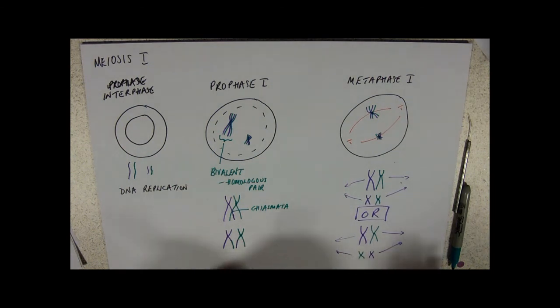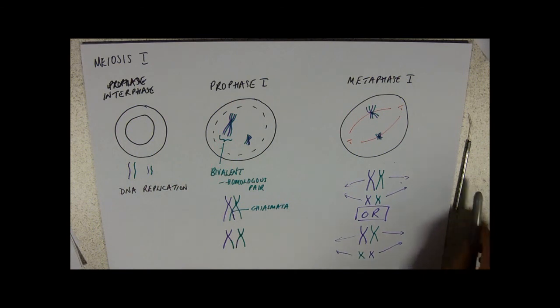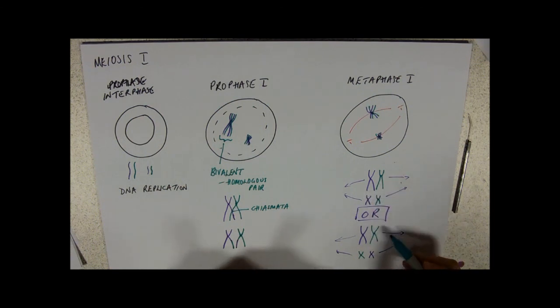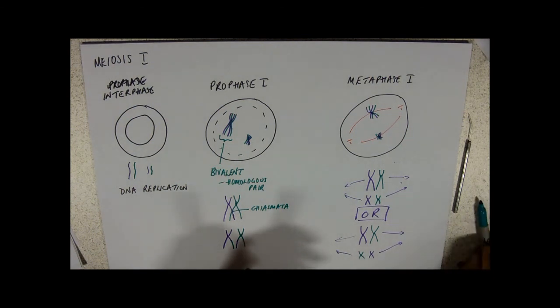Anaphase. That's the idea of random assortment. So, these alleles, remember, are different from these alleles. These alleles are different from these alleles. So, it really does matter if it goes with a different chromosome. That's the idea of random assortment.